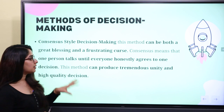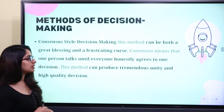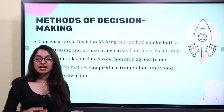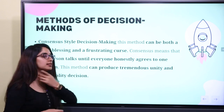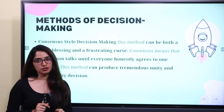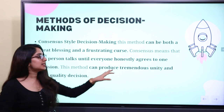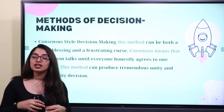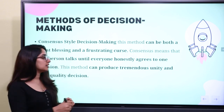Consensus style decision making is a method that can be both a great blessing and a frustrating curse. One person talks until everyone honestly agrees to one decision. This method can produce tremendous unity and high quality decisions — it can be a great blessing. But it can also be a curse where people do not come together and they separate, making it a frustrating process.